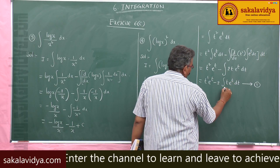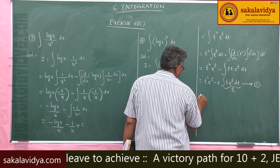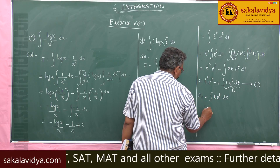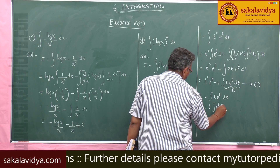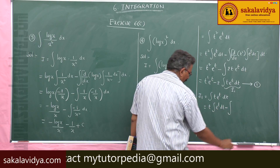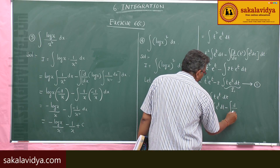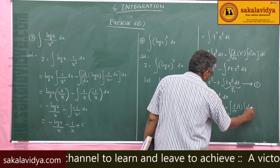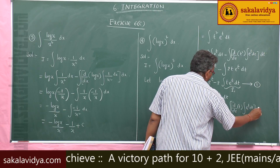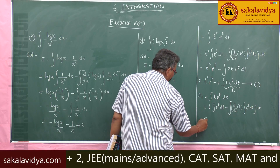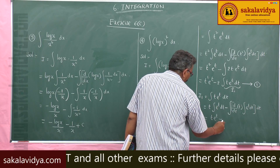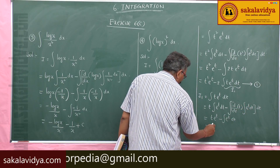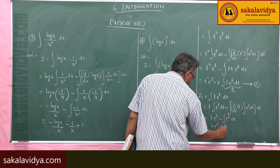Let I₁ = ∫t·eᵗ dt. Applying integration by parts: t·∫eᵗ dt minus ∫(d/dt of t)·(∫eᵗ dt) dt. This gives t·eᵗ minus ∫eᵗ dt, which equals t·eᵗ minus eᵗ. Call this equation 2.